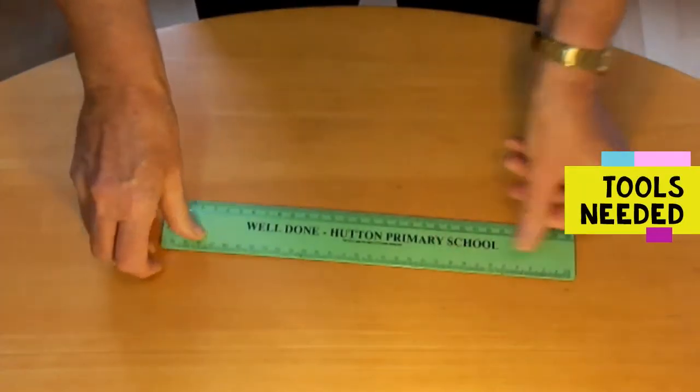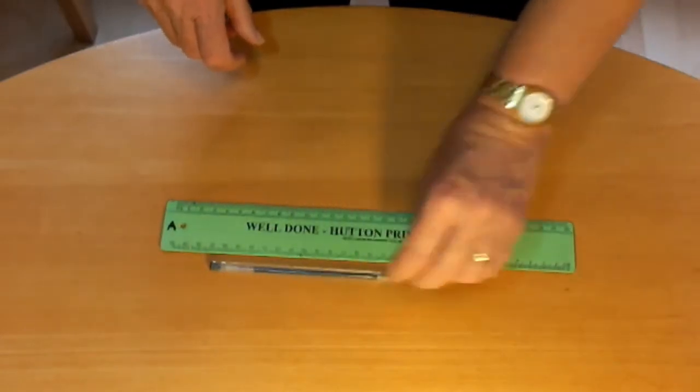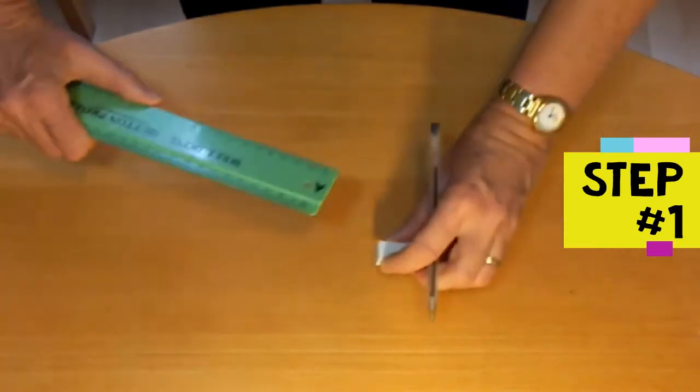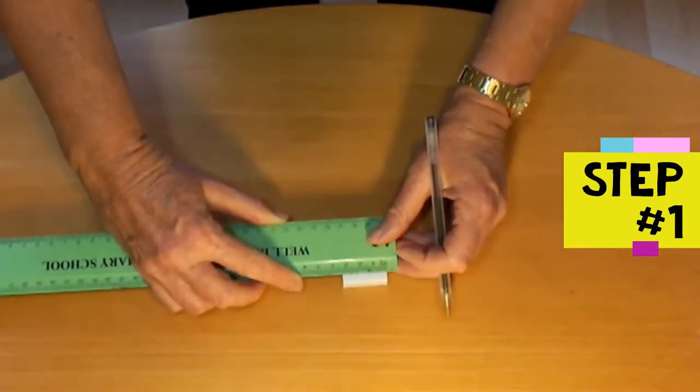And, you'll need a ruler, a ballpoint pen and some Blu-Tac. Step one is to fit the eraser. Measure and mark a line across the middle of the eraser.